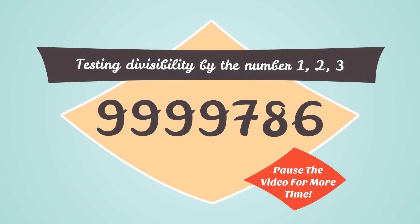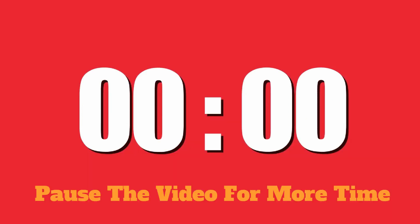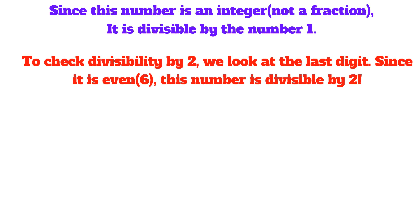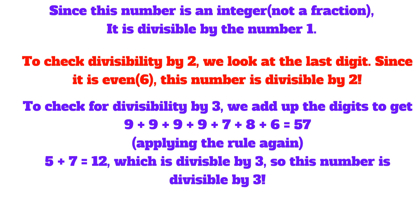Let's test divisibility by 1, 2, and 3. Since this number is an integer and not a fraction, it is divisible by 1. To check divisibility by 2, we look at the last digit — since it is even (6), this number is divisible by 2. To check for divisibility by 3, we add up the digits to get 9+9+9+9+7+8+6, which gives us 57. Applying the rule again, 5+7 gives us 12, which is divisible by 3. So this number is divisible by 1, 2, and 3.